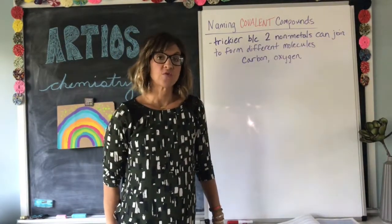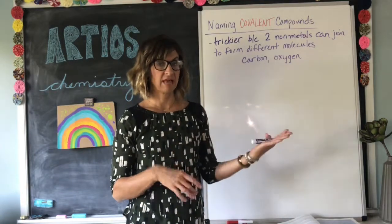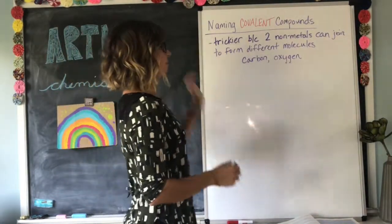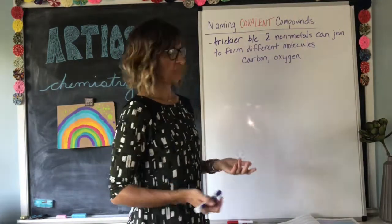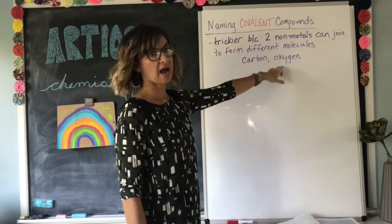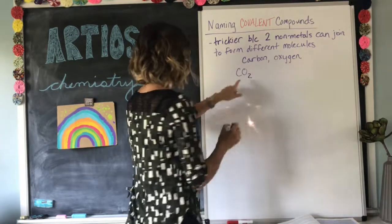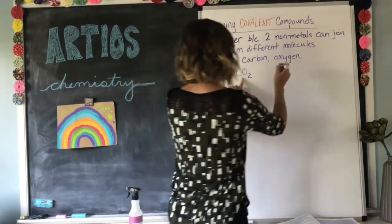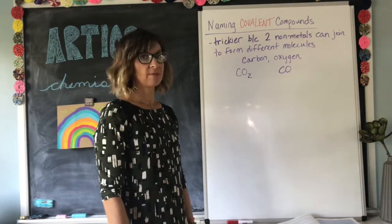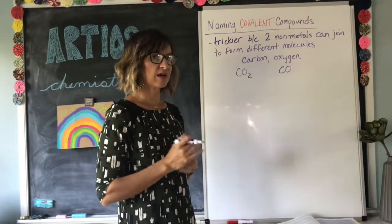Now we're going to talk about naming covalent compounds. When naming a compound, the very first step is to figure out whether it's ionic or covalent. Remember, ionic is going to have a non-metal and a metal; covalent is just going to be made of non-metals. Naming covalent compounds is trickier because two non-metals can join together sometimes in a number of different ways. Take carbon and oxygen — carbon and oxygen can join together to make carbon dioxide, or with one carbon and one oxygen to make carbon monoxide — a very different, poisonous gas.